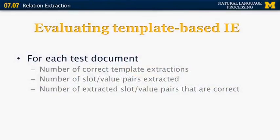The next thing is to figure out how many slot and value pairs were extracted for any of the different templates. For the case of management succession, for example, in MUC, you can have the name of the person who's being replaced in the organization and the name of the person who's replacing that previous person. If you get both of those correctly, you would get two points. If you miss one of them, you would only get half of the points. And finally, you want to get the number of extracted slot value pairs that are actually correct, not just extracted.